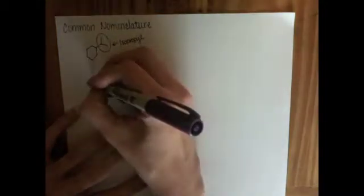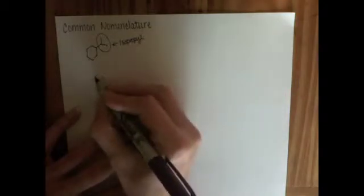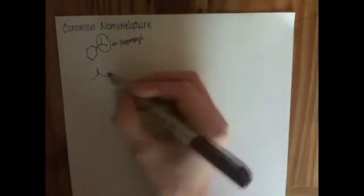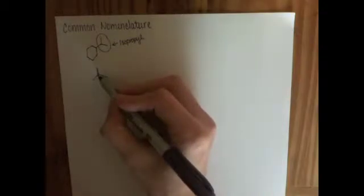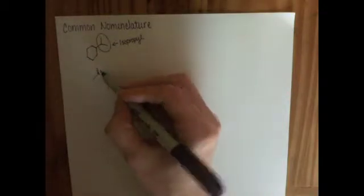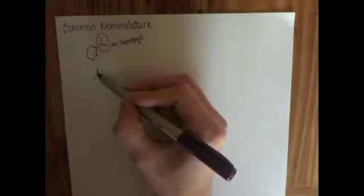Another way that we will notate the isopropyl group is to show the three carbons with a squiggly line on the center carbon to show that that substituent is attached to the parent molecule at carbon number two.